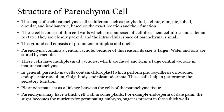Water and ions are stored by vacuoles. These cells have multiple small vacuoles which fuse and form a large central vacuole in mature parenchyma. In general, parenchyma cells contain chloroplasts, which perform photosynthesis, as well as ribosomes, endoplasmic reticulum, Golgi bodies, and plasmodesmata. These cells help in performing the secretory function. Plasmodesmata act as a linkage between the cells of the parenchyma tissue.